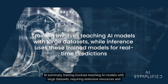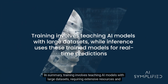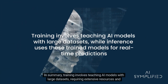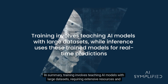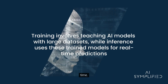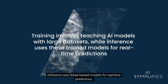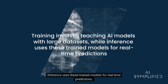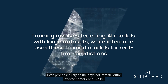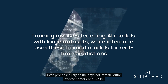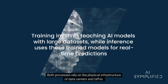In summary, training involves teaching AI models with large datasets, requiring extensive resources and time. Inference uses these trained models for real-time predictions. Both processes rely on the physical infrastructure of data centers and GPUs.